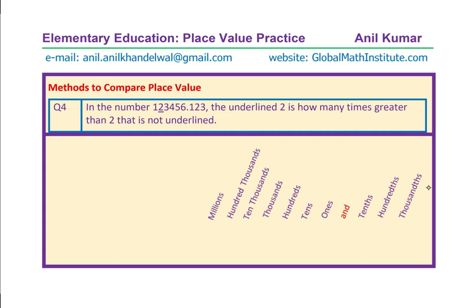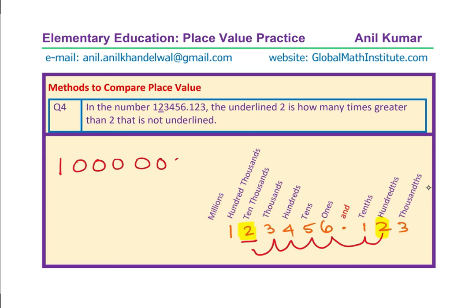Here is another number for practice. In the number 123,456.0123, the underlined 2 — which is in the hundred-thousands place — is how many times greater than the 2 that is not underlined, which is in the thousandths place? Moving left from the thousandths position, we count 6 positions, giving 1 followed by 6 zeros — that is 1,000,000. So the answer is 1 million times.